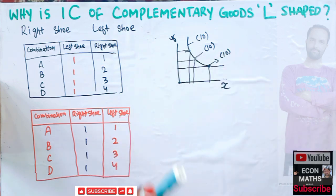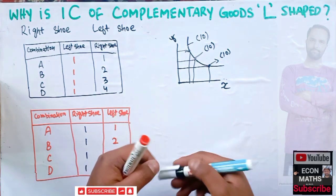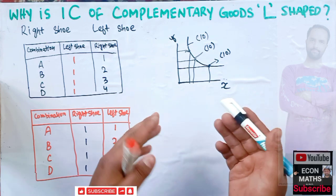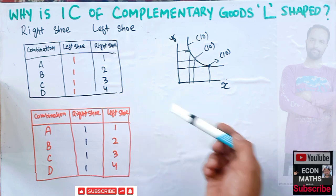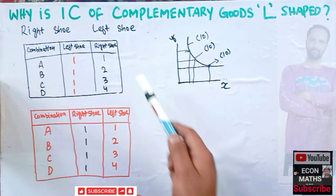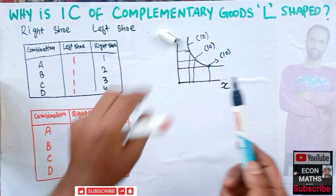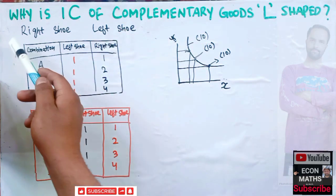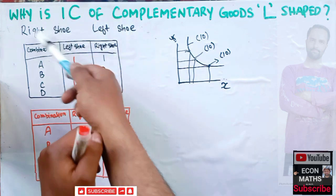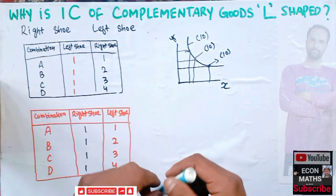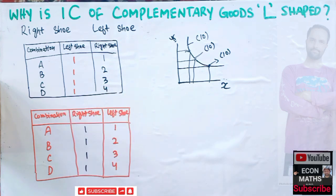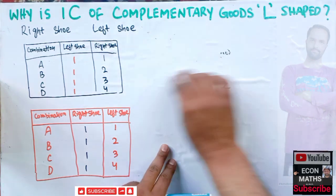By perfectly complementary goods, we mean a good that must be consumed with another good. A classic example is the right shoe and the left shoe — these are perfectly complementary goods. We cannot use a right shoe without the left shoe, and similarly we cannot use a left shoe without the right shoe. We have to consume these two goods simultaneously.